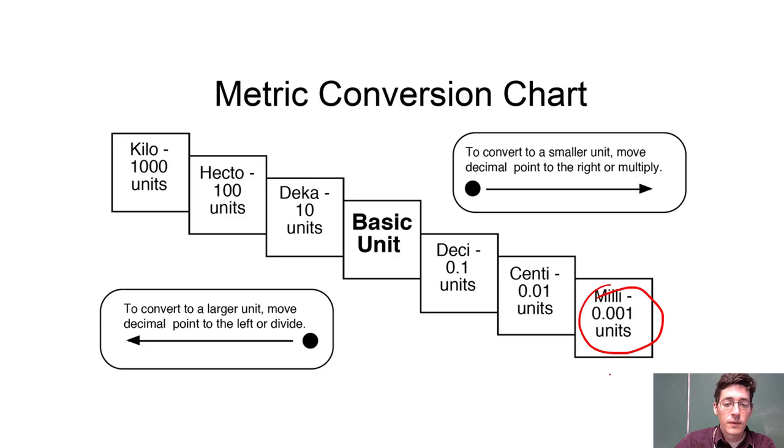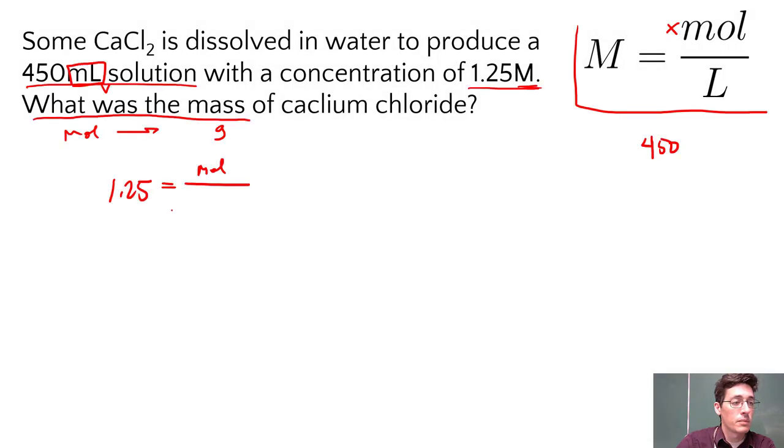If we look at our unit conversions, milliliters is down here. I have 450, and there's a decimal at the end. And I'm going to jump one, two, three spots back to my liters here, my base unit. So my 450 is going to get moved three spaces to 0.450 up here. This is my liter volume that goes into my equations. We're going to do 0.450.